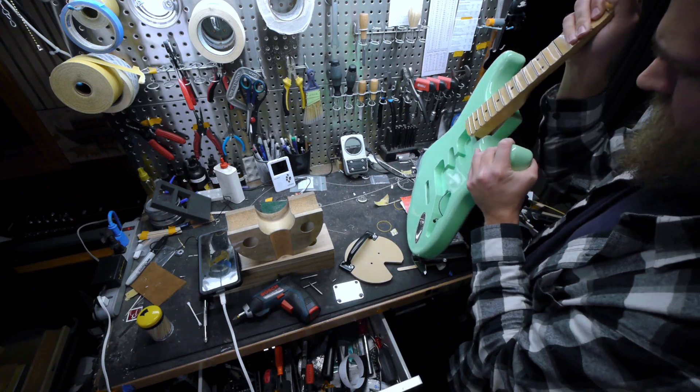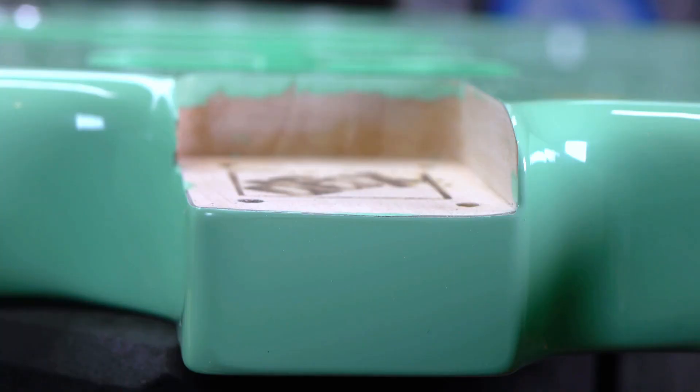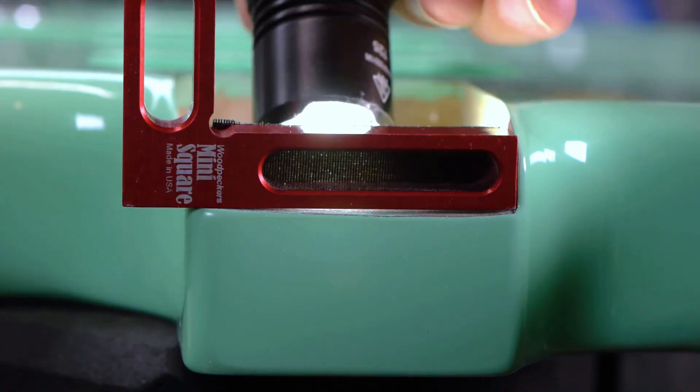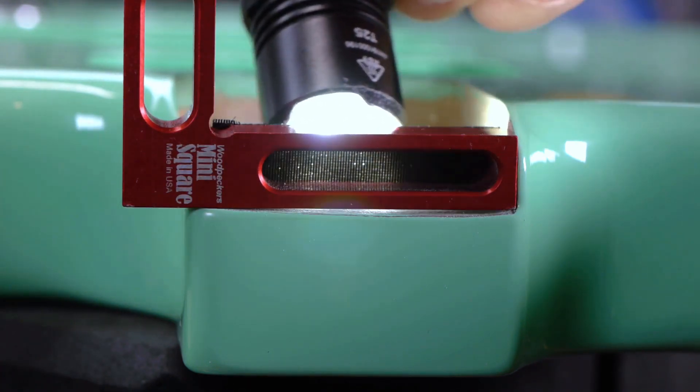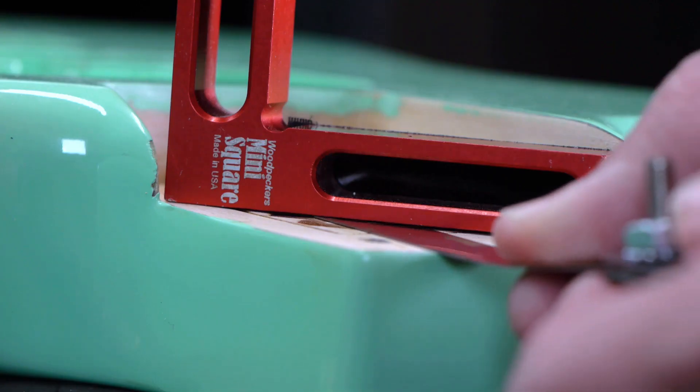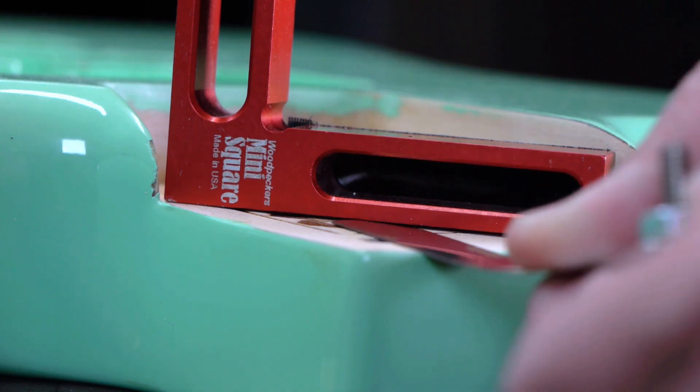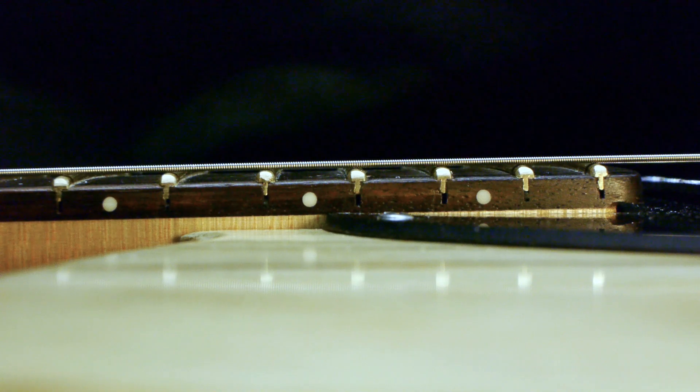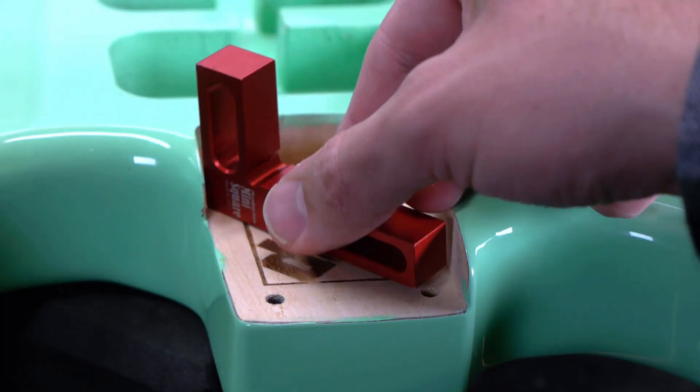Removing the neck, we can see the problem is even worse. The neck pocket isn't only too thick but extremely uneven. This not only doesn't look good but is a setup disaster. Even with the saddles adjusted to their highest possible position, the strings will be flat against the fingerboard. The neck is sitting way too high in that pocket.